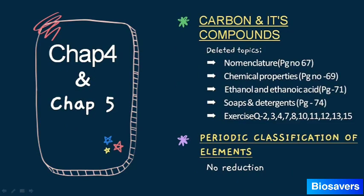In Chapter 4, quite a few topics have been deleted. The deleted topics are: nomenclature, chemical properties, ethanol and ethanoic acid, and soaps and detergents. From the exercises, questions 2, 3, 4, 7, 8, 10, 11, 12, 13, and 15 are deleted. Other than these, all topics and exercise questions must be referred.